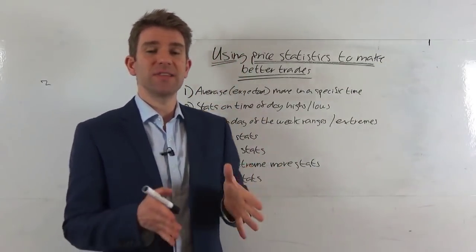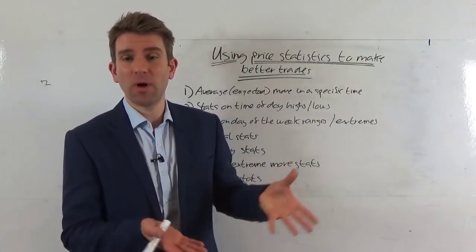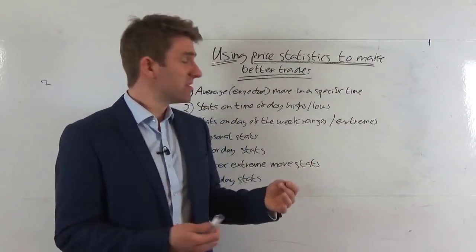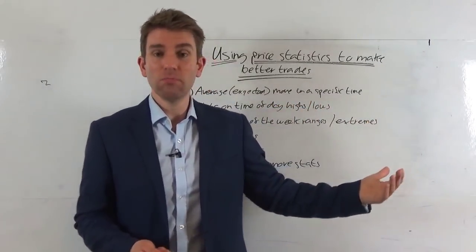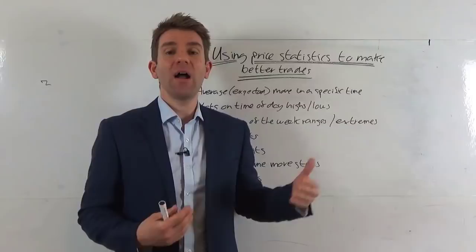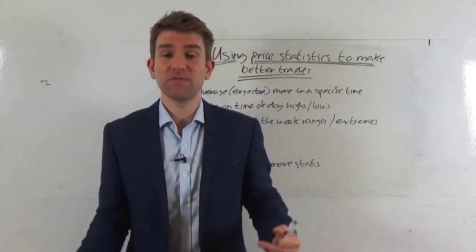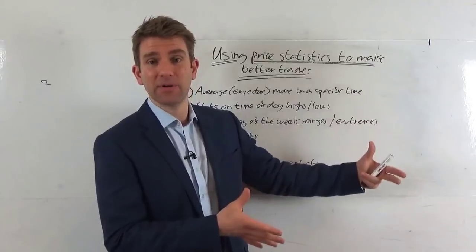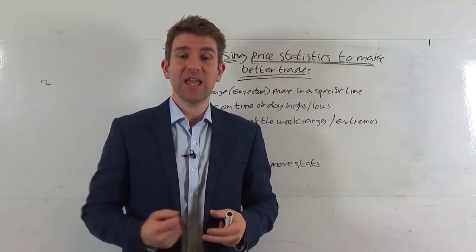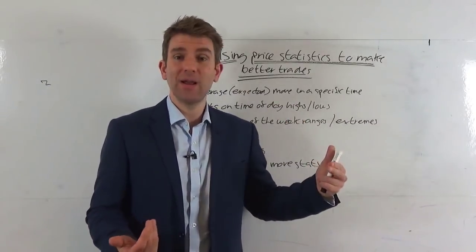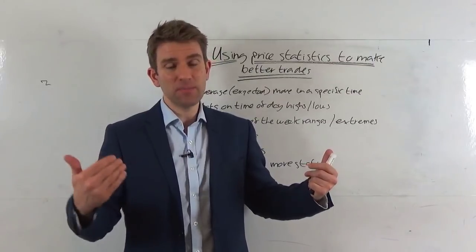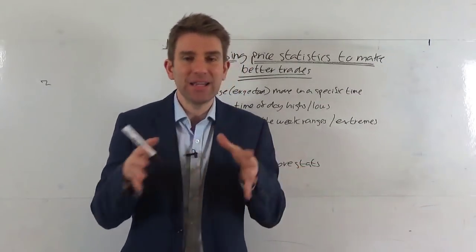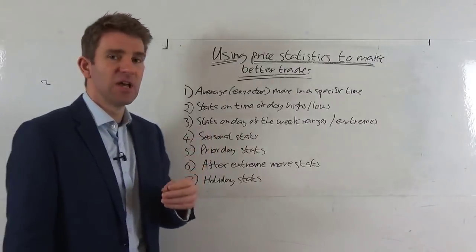Number three: stats on day of the week ranges and extremes. Certain days of the week are more volatile than others — for example, Wednesday or Thursday on the pound might be more volatile. You can get these stats online or in Excel. You might find that over the last two months the market has made the high of the week on a Friday. Armed with that, going into Friday you want to align yourself long rather than short, use it as an extra layer of edge, and look for your bull flag or pullback trade playing off that thesis.